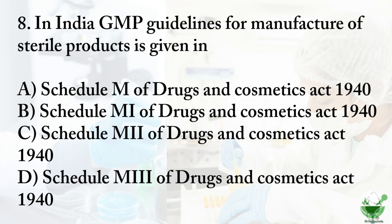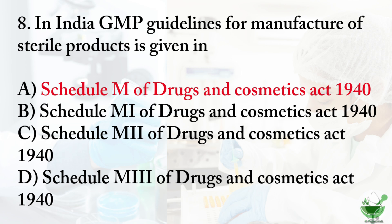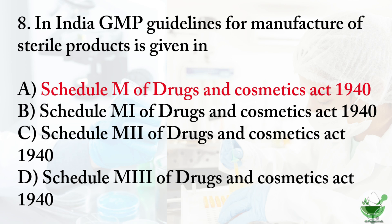Question number eight: in India, GMP guidelines for manufacture of sterile products is given in — option A: Schedule M of the Drugs and Cosmetics Act, option B: Schedule M1, option C: Schedule M2, option D: Schedule M3 of the Drugs and Cosmetics Act. The correct option is A, Schedule M. Schedule M outlines good manufacturing practices that must be followed by pharmaceutical manufacturing units. Schedule M1 covers requirements for homeopathic preparations, M2 for cosmetics, and M3 for medical devices.